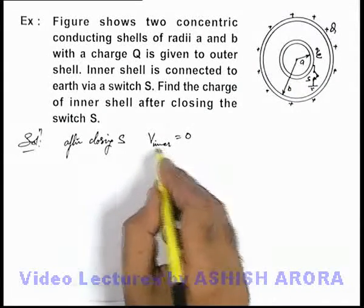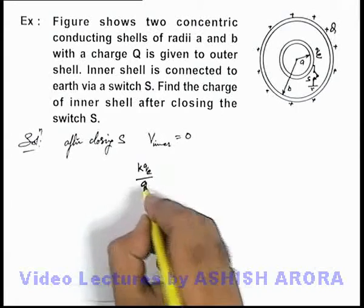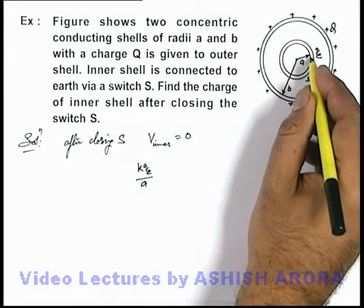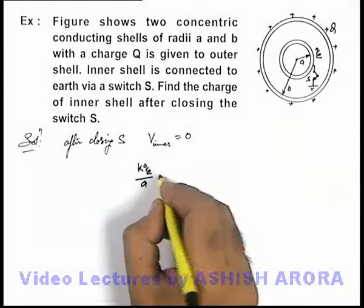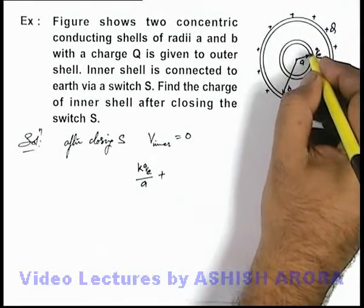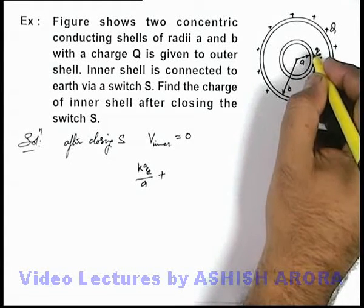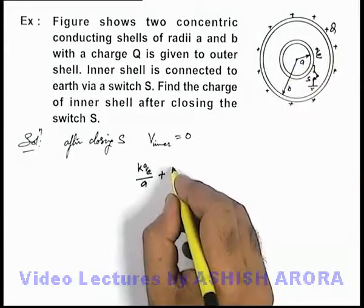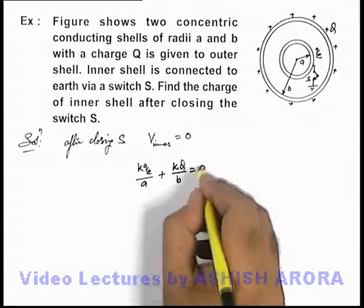We can write the potential of the inner shell as kQe/a, which is due to the charge on its own surface supplied by earth, plus the charge on the outer shell. Since it is at an interior point, the potential is exactly equal to that of the outer surface, so due to the outer charge it will be kQ/b, and this total should be zero.